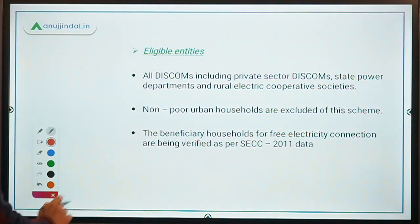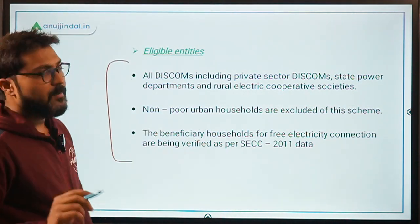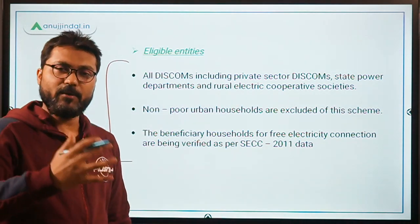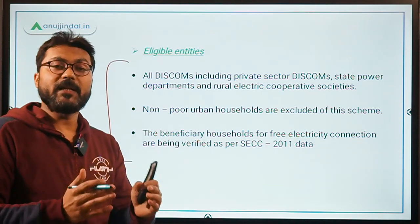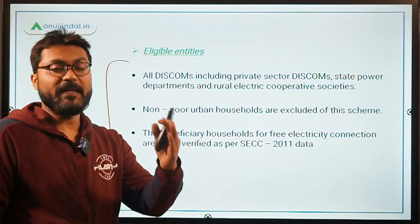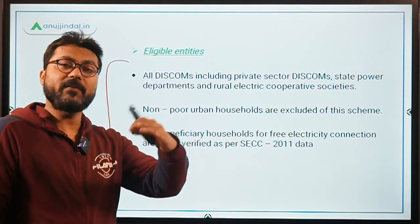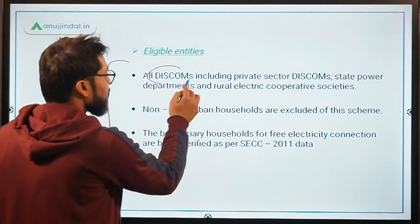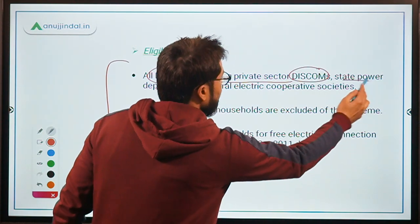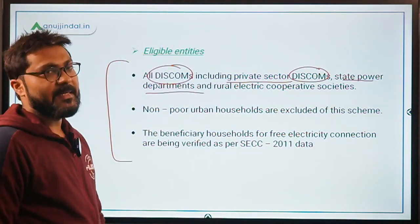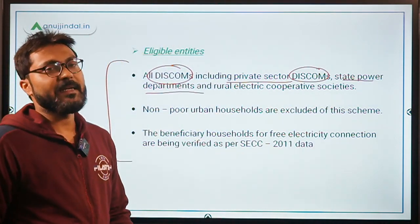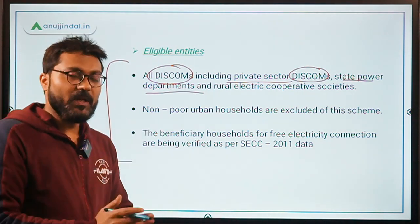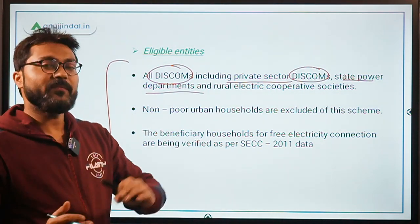Regarding eligibility, the implementing strategy is that financial assistance will be provided to the distribution companies in the electricity sector, and they will provide electricity to the eligible households. All DISCOMs including private sector DISCOMs, state power departments, and rural electric cooperative societies are eligible to receive that financial assistance.